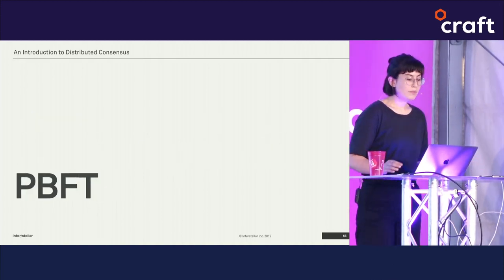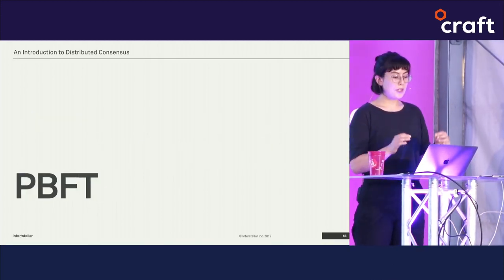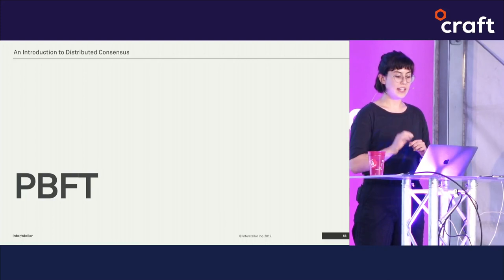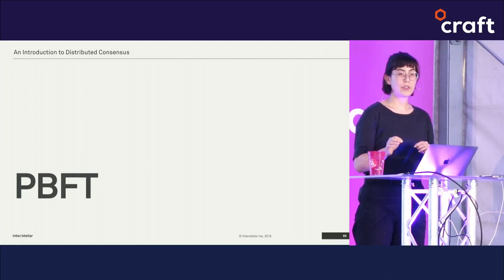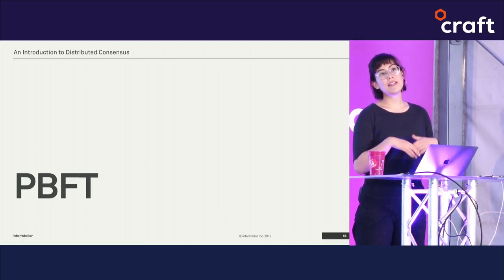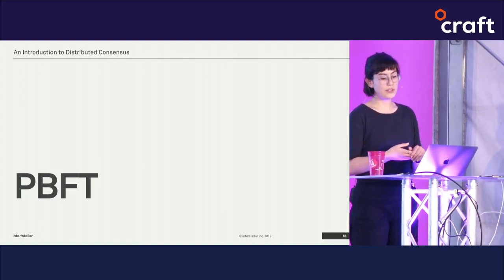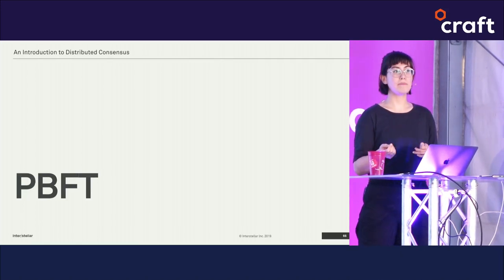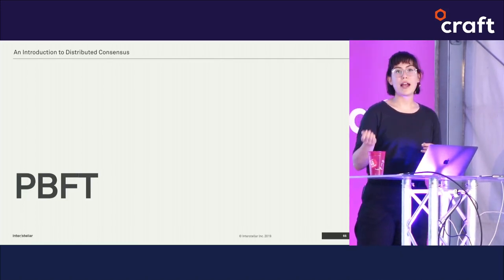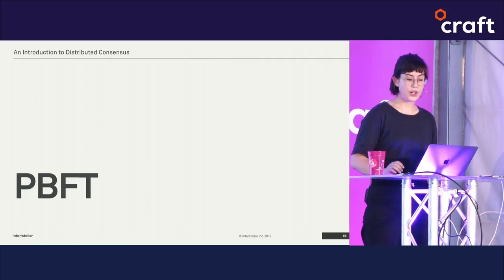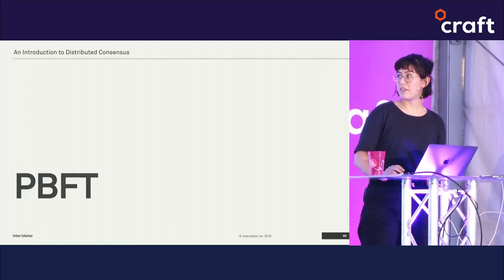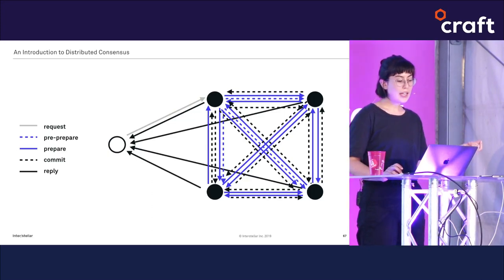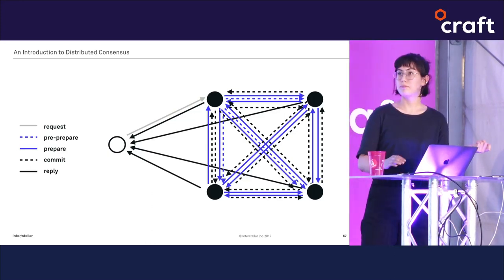How can we address Byzantine failure? Just as we built Paxos up from our naive solution, we can build another algorithm that looks a lot like Paxos but with a more descriptive name: Practical Byzantine Fault Tolerance, or PBFT. Like Paxos, PBFT requires nodes to go through a multi-step voting process, but now it becomes even more complex — it introduces more rounds of voting and even more types of nodes.